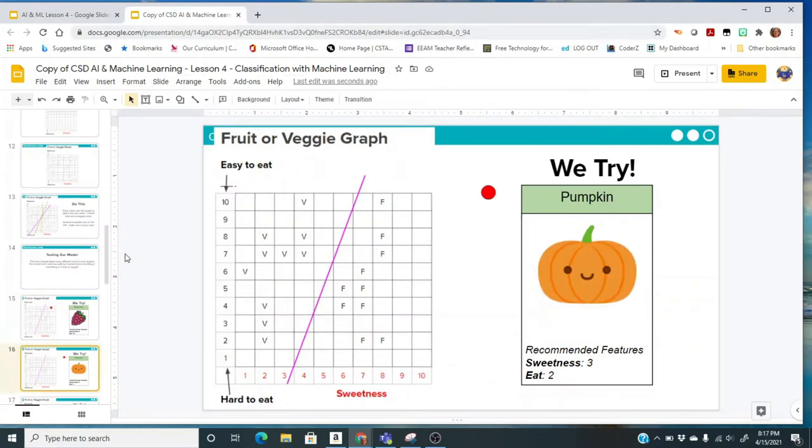The next one we're going to try is a pumpkin. The recommended features are 3 and 2. You can do it by typing an F or V if you'd like, or just do it mentally. I would go to 3 for sweetness and 2 for eat. And this is definitely falling on the veggie side.